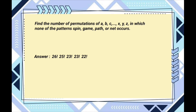To count the number of permutations that contain two of the forbidden patterns, we choose two patterns out of the four and treat each pair as a single letter. There are six ways to choose two patterns out of four, so the total is 6 times 22 factorial. To count permutations containing three forbidden patterns, there are four ways to choose three out of four, giving four times 21 factorial.